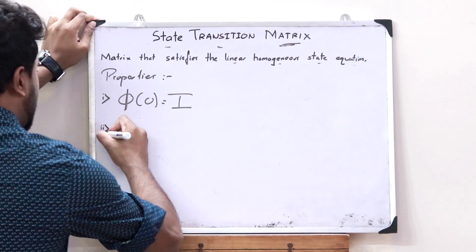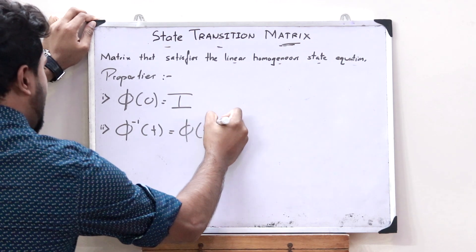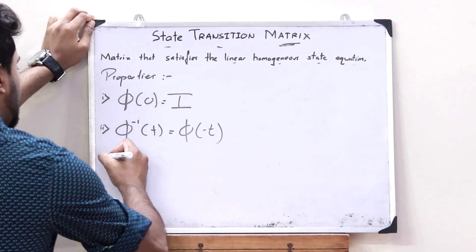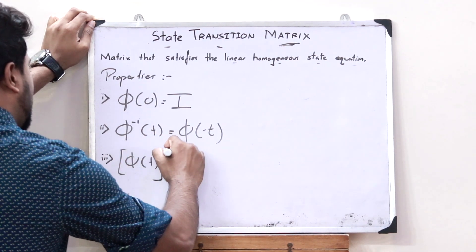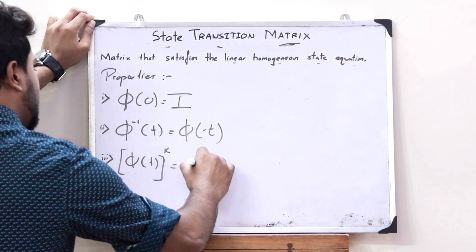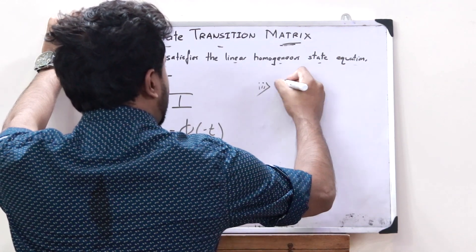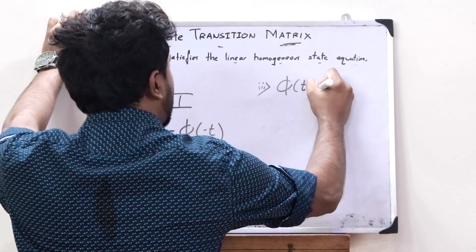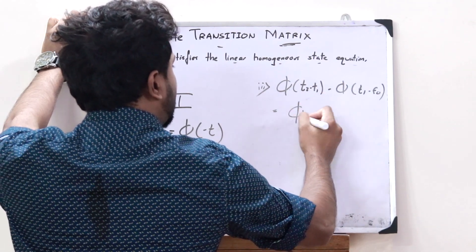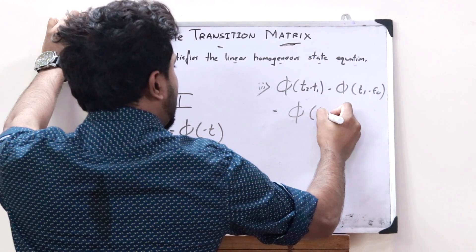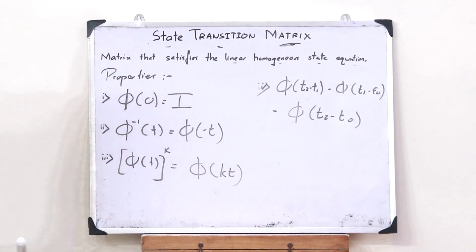The second property is that the inverse of a state transition matrix is nothing but phi(−t). The third property is that the state transition matrix raised to a particular power k is nothing but the state transition matrix phi(kt). The fourth property is that phi(t₂ − t₁)·phi(t₁ − t₀) = phi(t₂ − t₀).